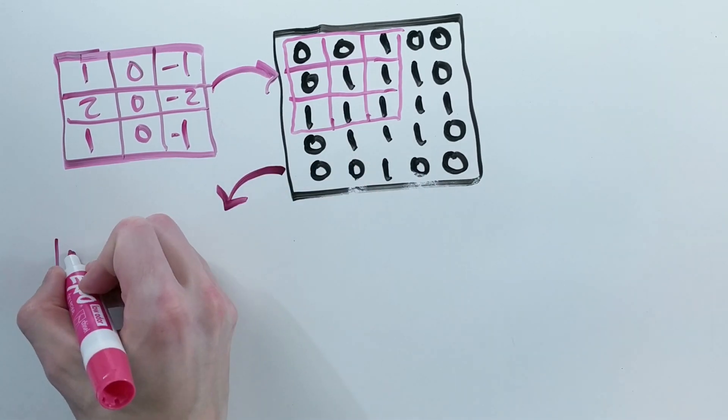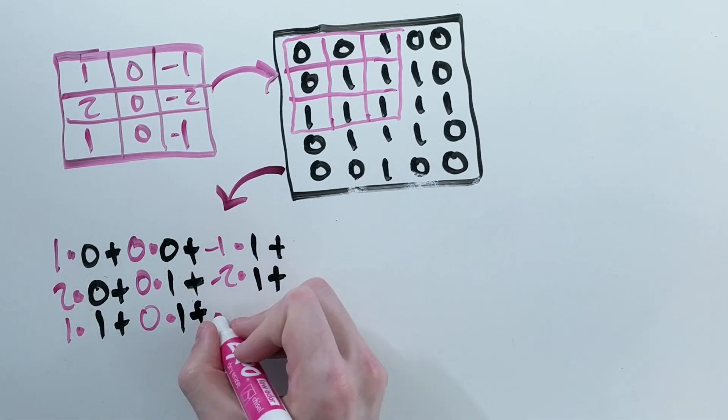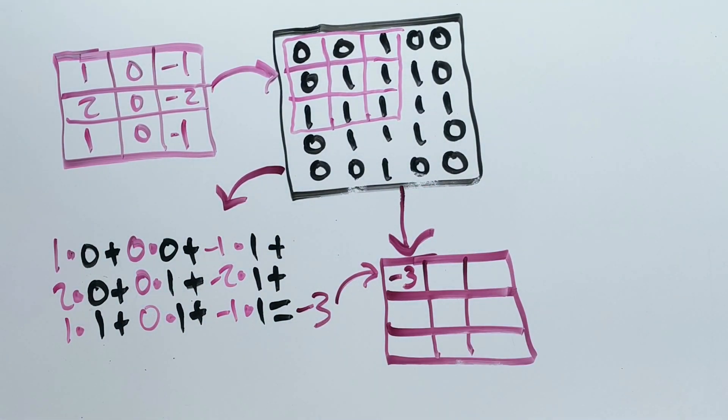And then for every value in the filter, it will multiply that value by the corresponding value in the input and add them together. For this example, we get negative 3 for this first position.